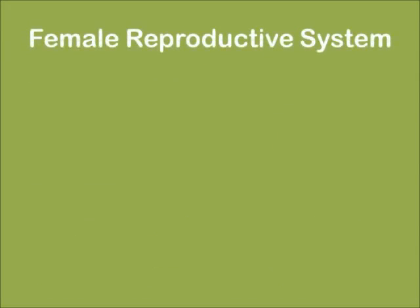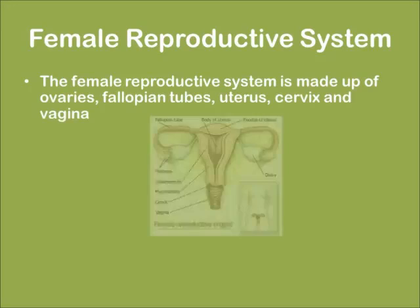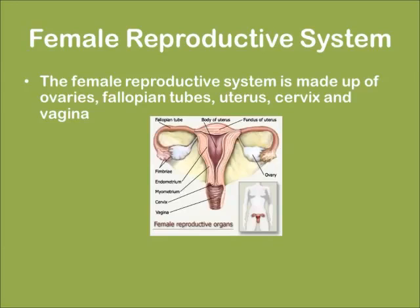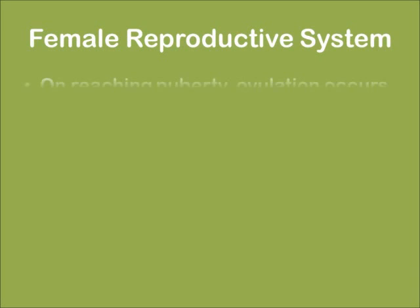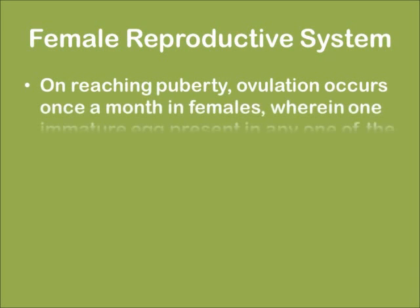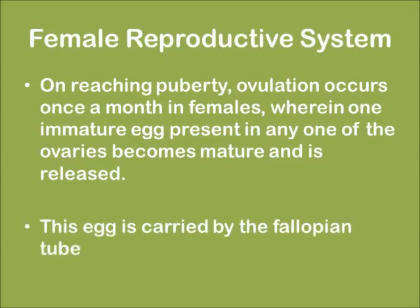The female reproductive system is made of ovaries, fallopian tubes, uterus, cervix, and the vagina, as shown in the sketch below. Ovaries are responsible for the production of ova (eggs) as well as for secreting the hormones estrogen and progesterone. On reaching puberty, ovulation occurs once a month in females, wherein one immature egg present in any one of the ovaries becomes mature and is released. The egg is then carried by the fallopian tube.